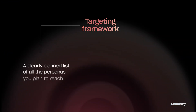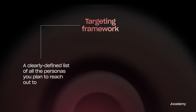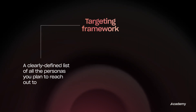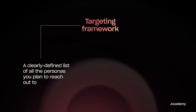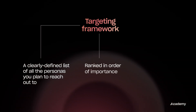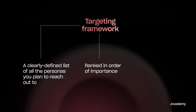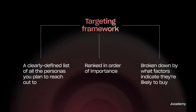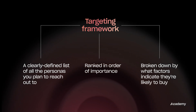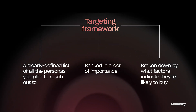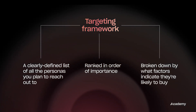If you're hitting up the wrong people, it doesn't matter how good your emails are — you're never going to get anywhere. A targeting framework is just a clearly defined list of all the types of people you or your team will be reaching out to, ranked in order of importance, and broken down by what factors indicate they're most likely to be in the market for what you're selling.